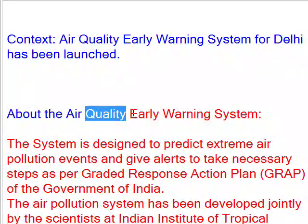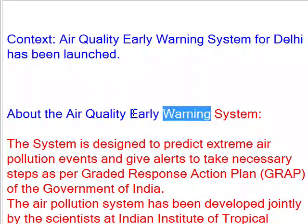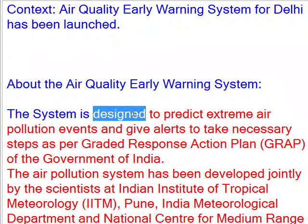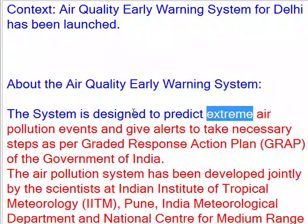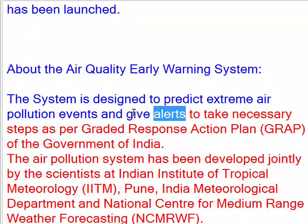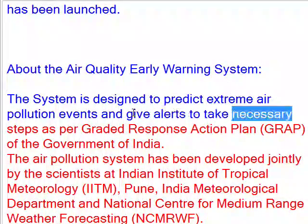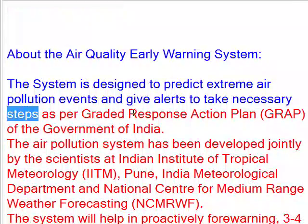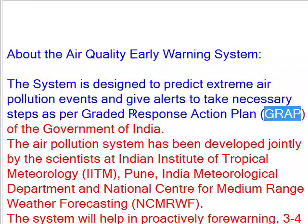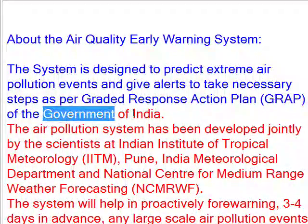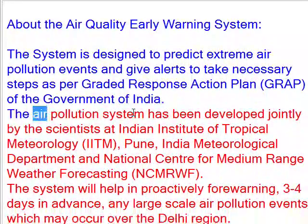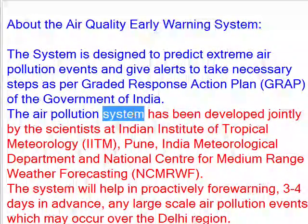The air quality early warning system is designed to predict extreme air pollution events and give alerts to take necessary steps as per the Graded Response Action Plan (GRAP) of the Government of India.